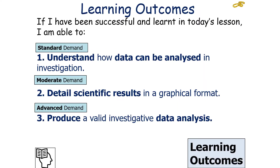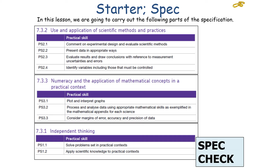If we're successful in today's lesson, we should be able to understand how data can be analysed in an investigation, detail scientific results, and produce a valid investigative data analysis. This falls into the AQA A-level physics specification covering the use and application of scientific methods and practices, numeracy and the application of mathematical concepts in a practical context, and independent thinking.